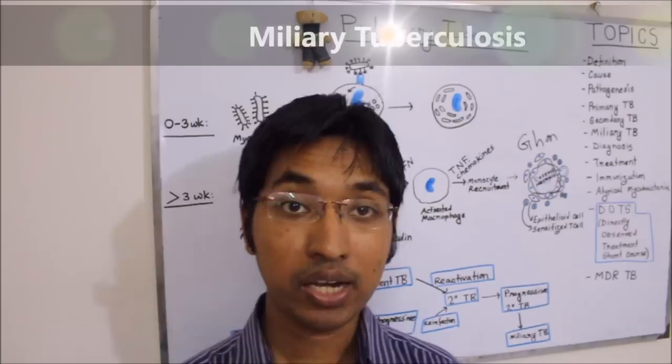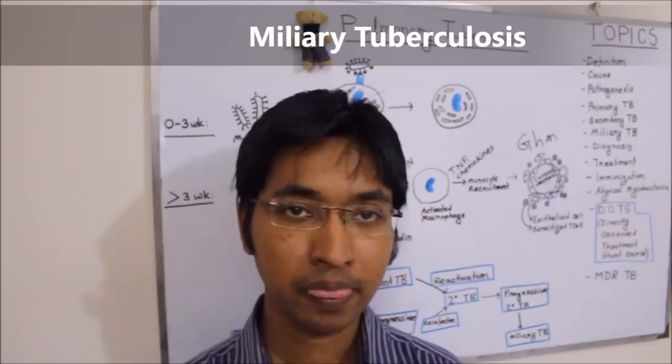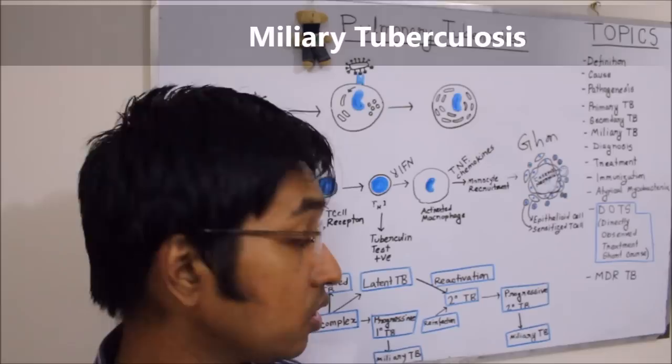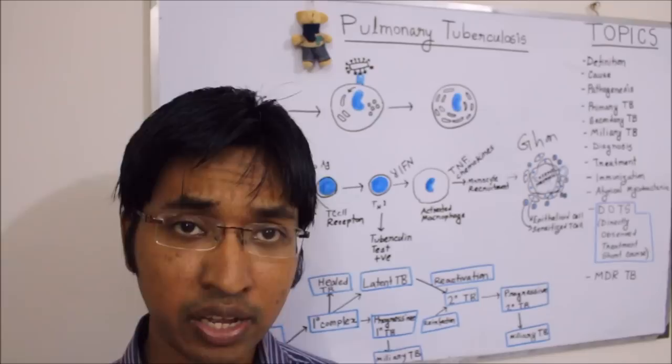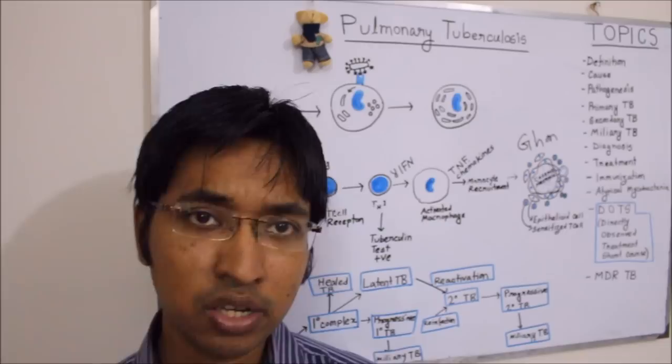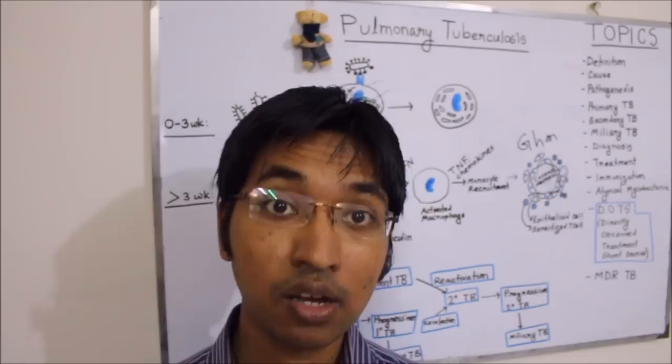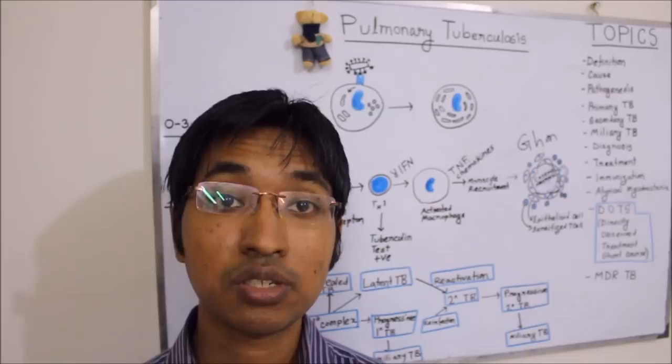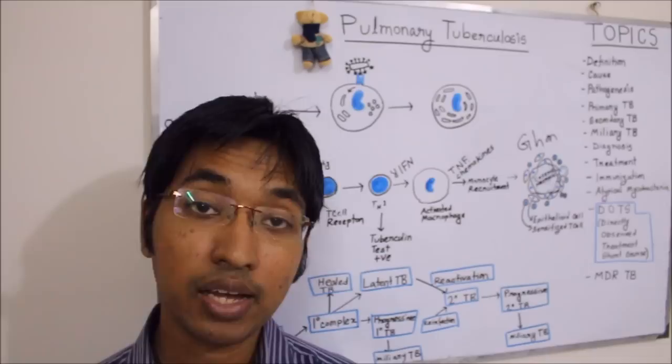Moving on to miliary tuberculosis. Miliary tuberculosis arises when there is blood-borne dissemination of TB. Both primary and secondary progressive tuberculosis can give rise to miliary tuberculosis. The usual presentation is two to three weeks of fever with anorexia, weight loss, and dry cough,